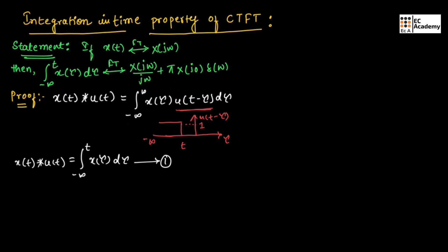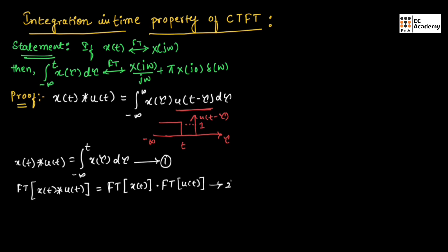So, let us find the Fourier transform of x of t convoluted with u of t. We can write this as Fourier transform of x of t into Fourier transform of u of t. Let us take this as equation number 2. Here, convolution in the time domain is multiplication in the frequency domain. That is why we have written equation number 2 like this.